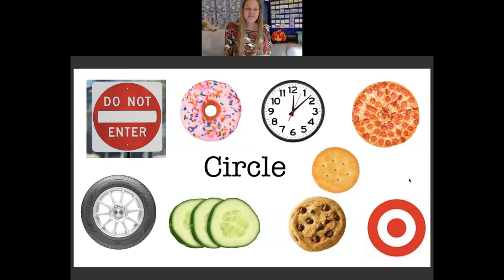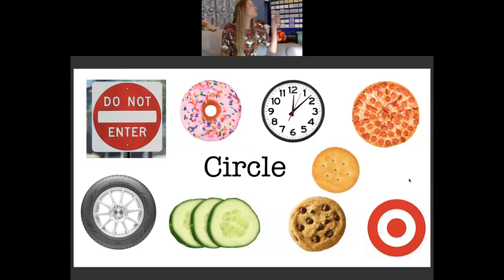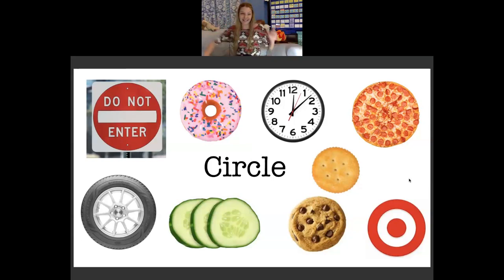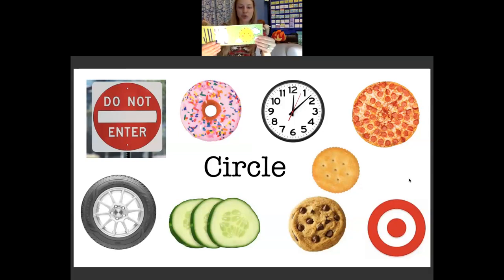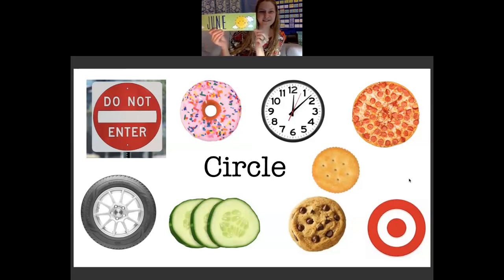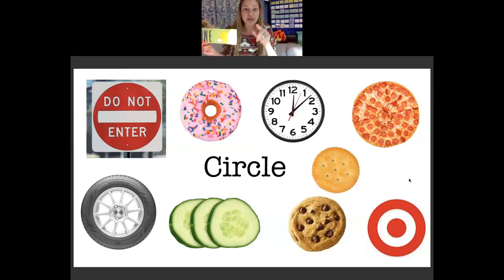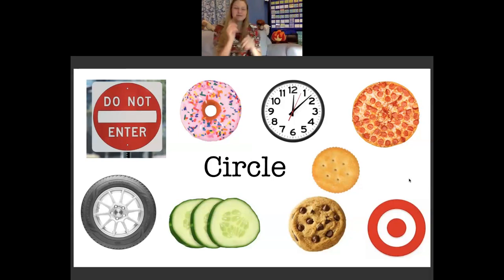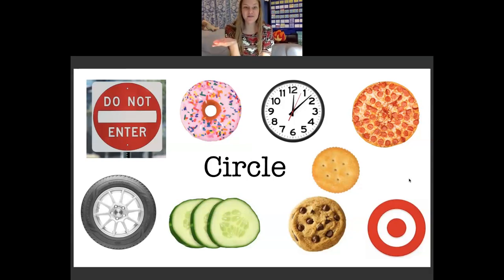You're going to go on a scavenger hunt for another example of that shape. If I were to say, try to find an example of a circle where you are right now — look around you. I see that right here on my calendar for June, there's a sun and that shape is a circle. What example of a circle can you find right now? Do you know how the game works? Great, let's go on to the next shape.